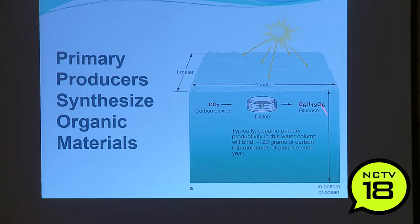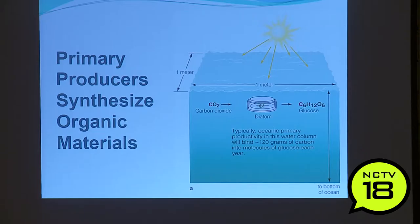Ocean primary productivity in the water column will create or bind 120 grams of carbon into molecules of glucose each year. One of the things we're trying to do is increase this number to fight climate change — the ocean is really the best way, probably the only way, to absorb that excess CO2, though some scientists are looking at injecting CO2 underground.